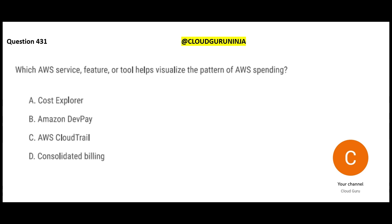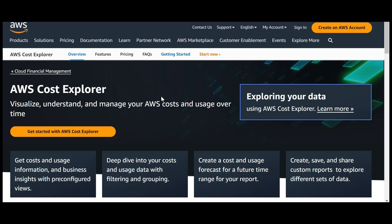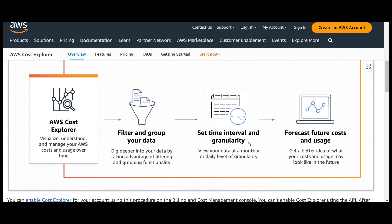The next question asks about an AWS service or tool that helps you visualize the pattern of AWS spending. Think of it like already living in a house and wanting to know after a couple of months how much you are spending on utility bills including electricity and internet, on maintenance like pipes, taps, electrical repairs, and on backup services like a generator when electricity is down.